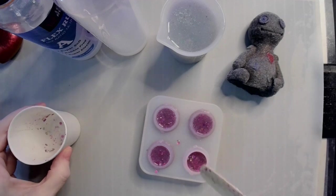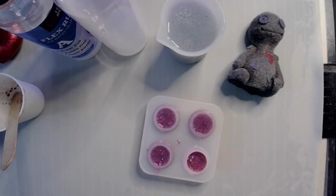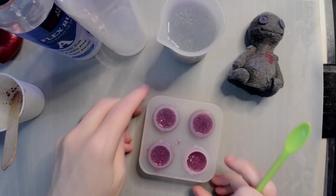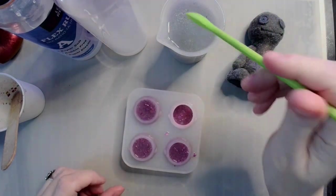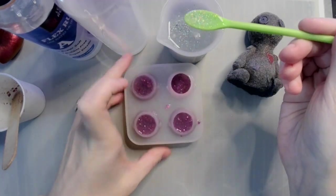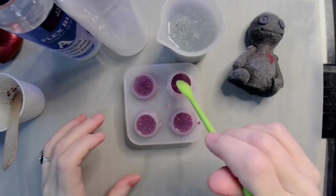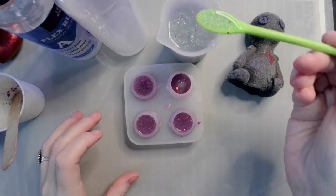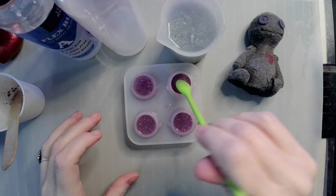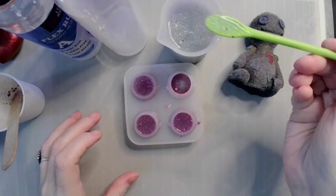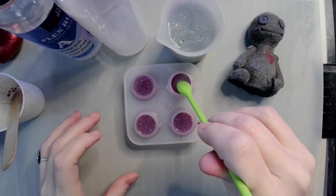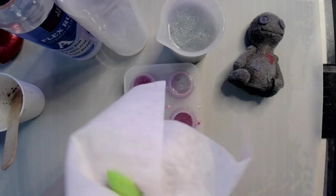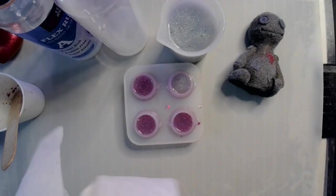All right, so this little guy doesn't have quite enough in him, so what I think I'm going to do is rob Peter to pay Paul here. Let me grab my silicone spoon, and I'm going to take some of my silver squishy sauce and just fill him the rest of the way up. This little guy will be special. He'll be different. Different is good.